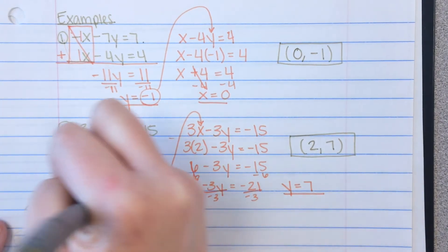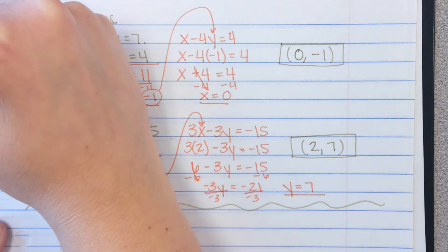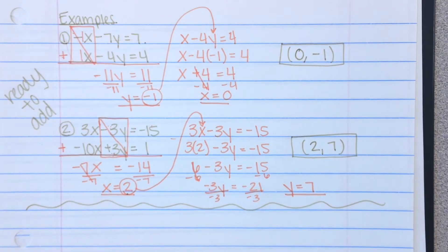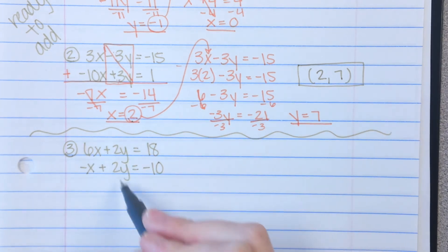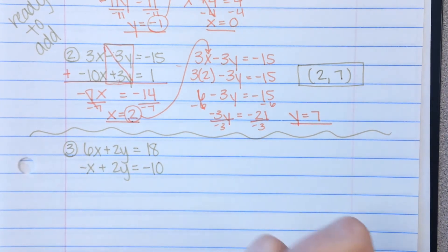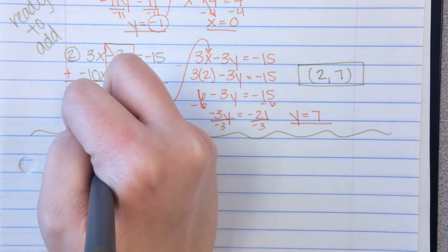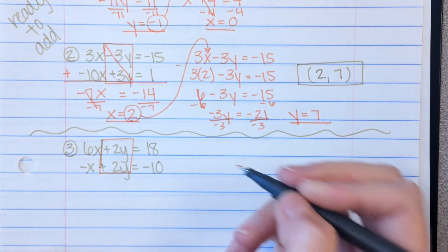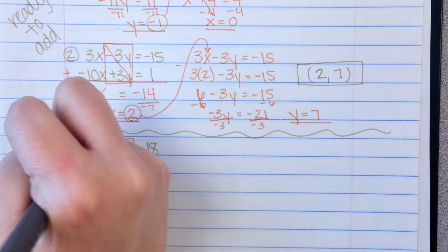Both of those systems were ready to add — matching coefficients with opposite signs. Here's example 3. It's lined up. Find the variable with a matching coefficient: we have 6 and 1 for x, and 2 and 2 for y. So we're going to look at the y's — they have matching coefficients.